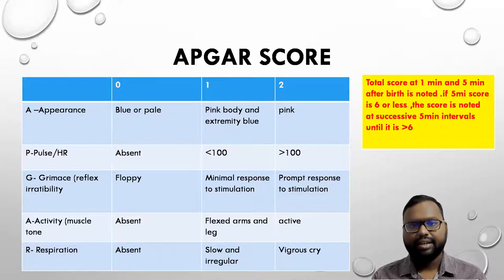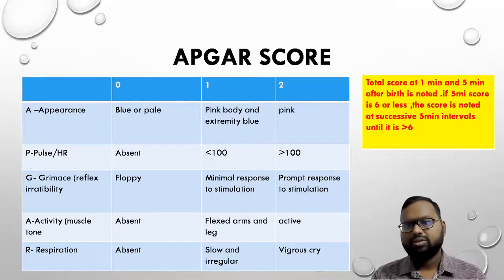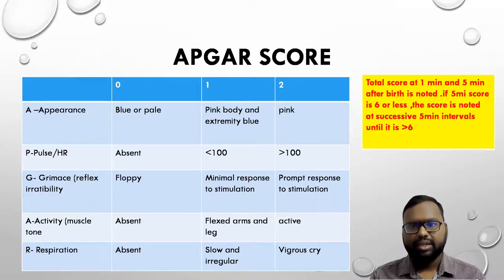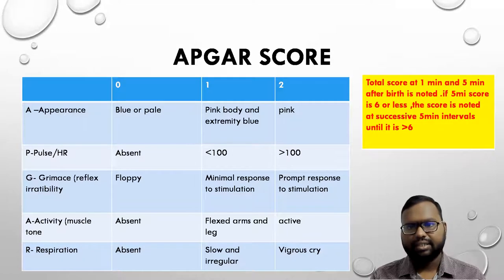Similarly for heart rate — you must be knowing this, so I will not discuss this in detail. APGAR score is usually noted at one minute and five minutes after birth. And if the five-minute APGAR score is six or less, the score is noted at successive five-minute intervals until we get an APGAR score more than six.